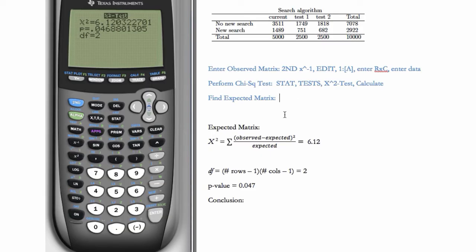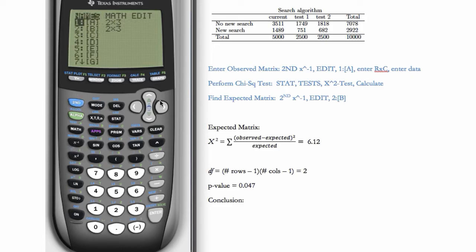And now we need the expected matrix. So to find the expected matrix, we're going to go to 2nd, x to the minus 1, which is matrix again. And we're going to edit. But this time we're going to edit matrix B. So here we'll go to 2nd, x to the minus 1, over to edit. And go down to number 2. Hit number 2 to edit matrix B.